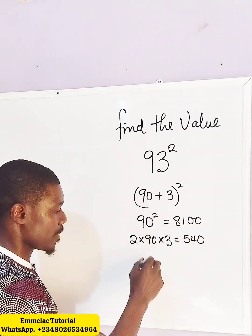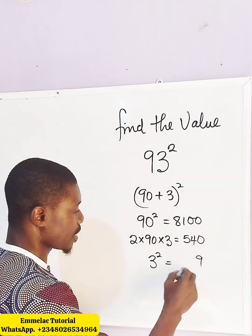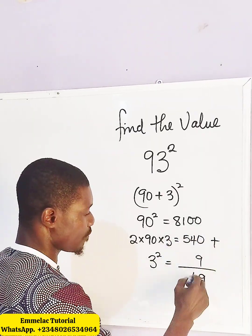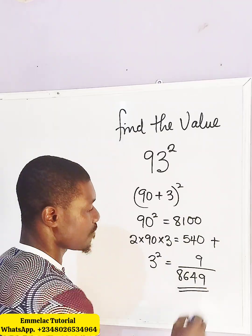The next one is to take 3 raised to the power of 2, which will give us 9. Now when we add all this together, we have 9, we have 4, we have 6, we have 8. Final answer: 8649.